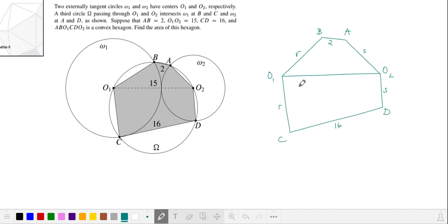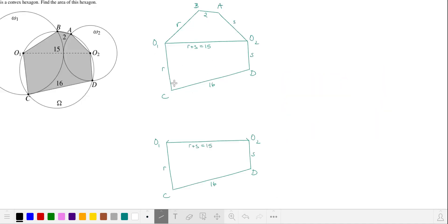Since omega 1 and omega 2 are tangent, we have the distance between the centers of the circles is r plus s and we're given that that is 15. Notice that if we take our hexagon and reverse the locations of A and B so that A moves to A prime and B moves to B prime, the area of our new hexagon is the same as the area of our old. So the distance from O1 to A prime is going to be the same as the distance from O2 to A, s, and the distance from O2 to B prime is going to be the same as the distance from O1 to B which is r.